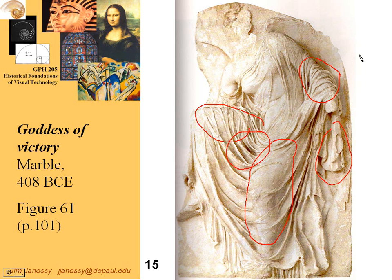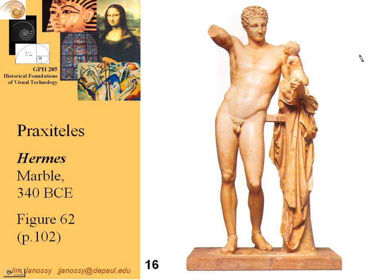Certainly the earlier forms of statuary inherited from the Egyptians were much more crude. Here, Praxiteles is the sculptor, and this is Hermes, one of the Greek gods, carved in marble. This might or may not be an original — it might be a copy. Part of it has broken off here — this arm — because of course it was extending out with an arm, and that tests the strength of the stone.